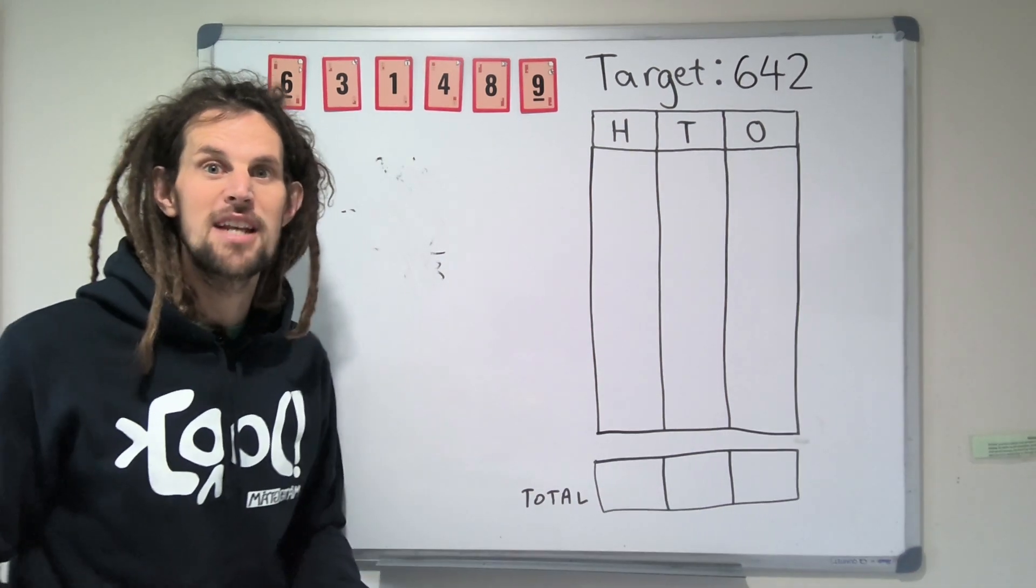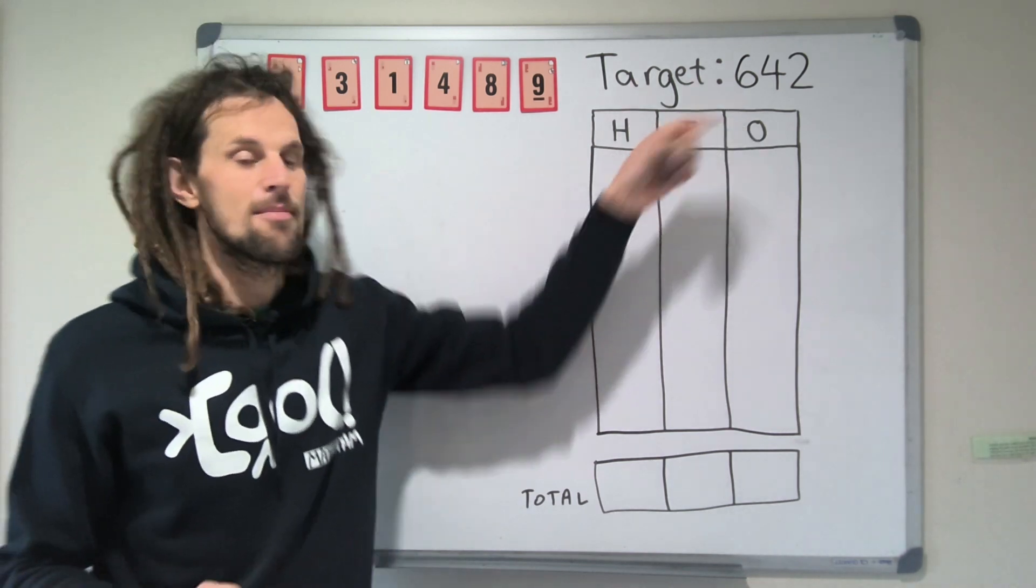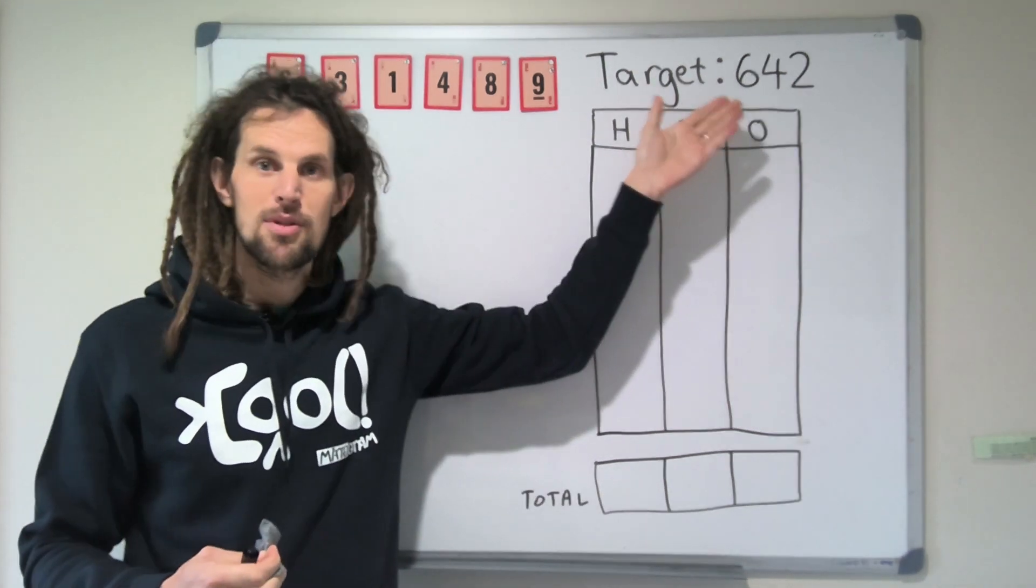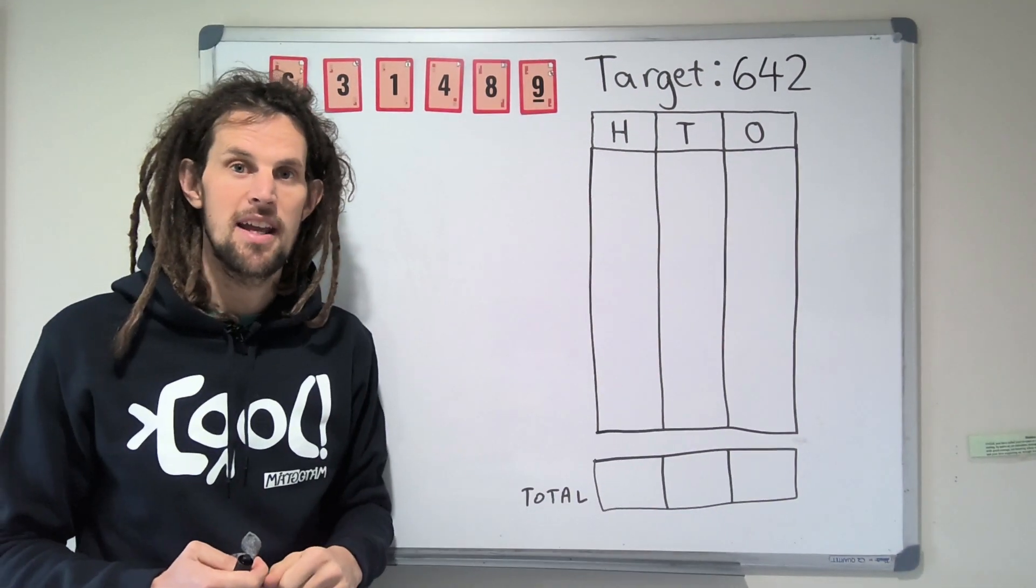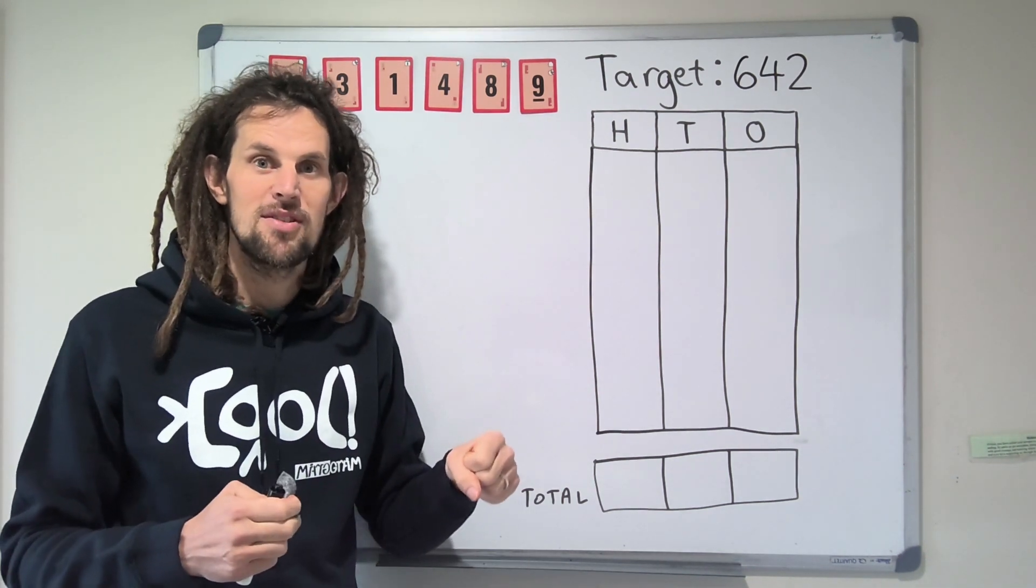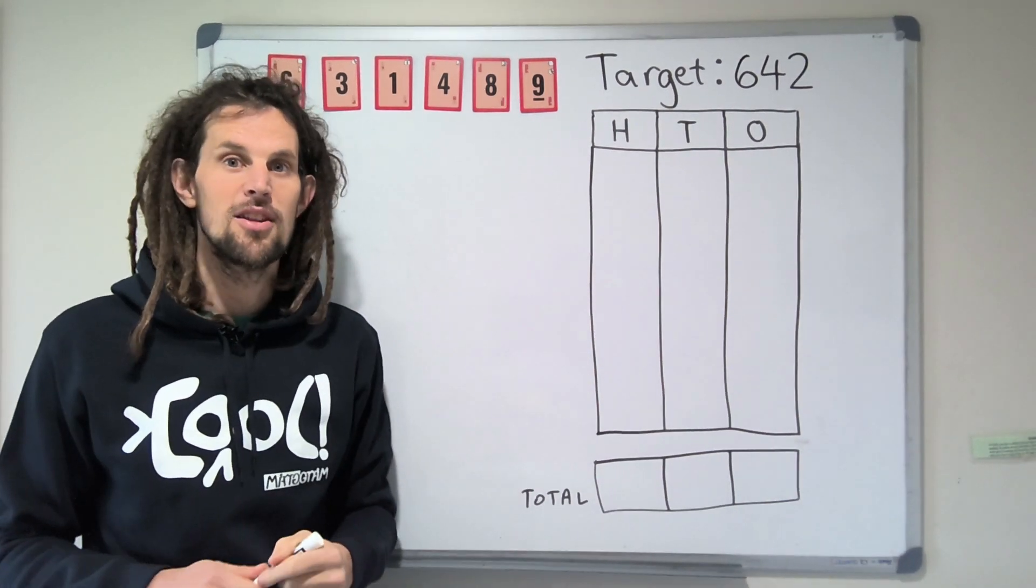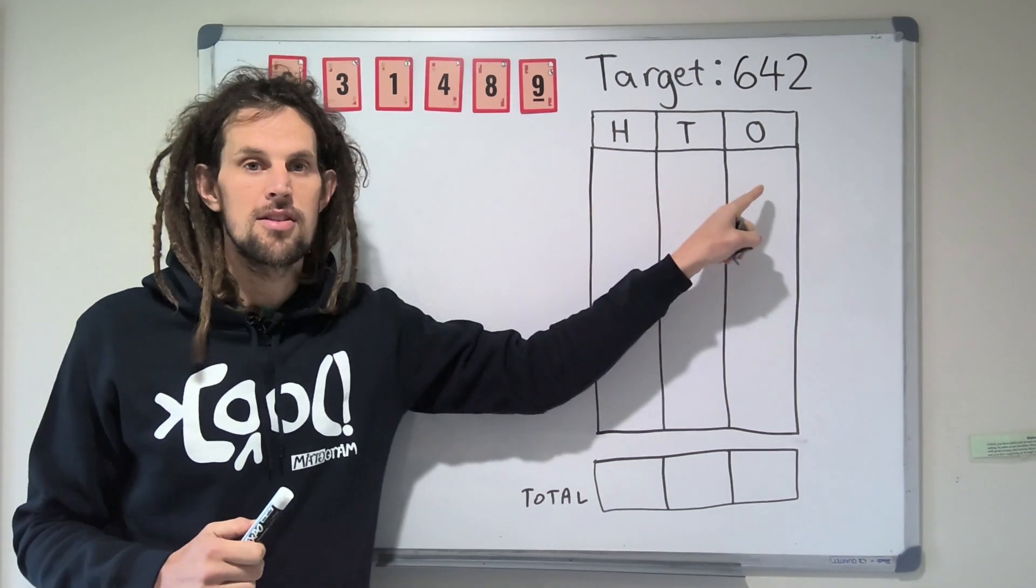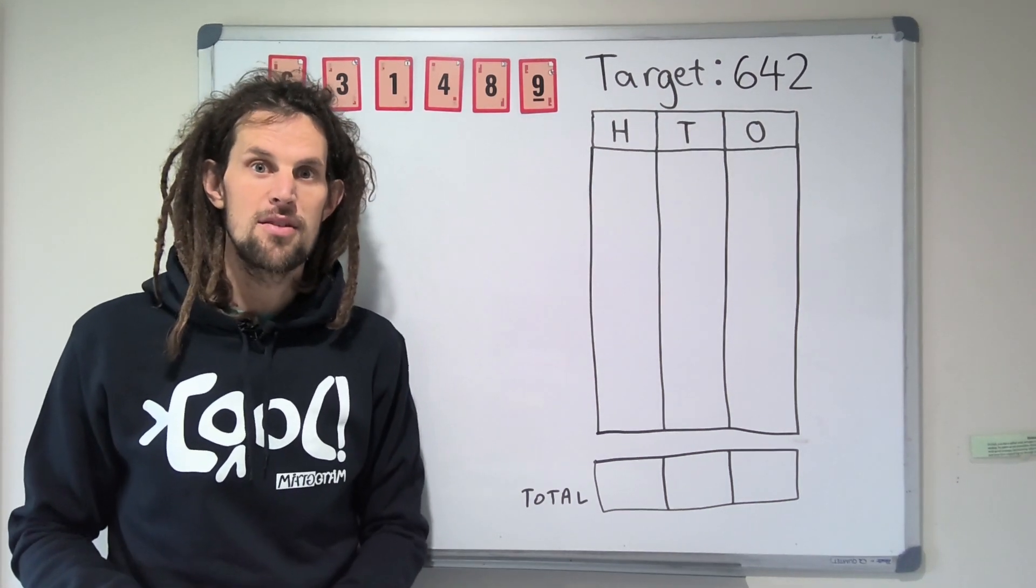So onto the game, this game is called Place Value Archery. What you've got to do is there's a target number. So to play this game it's zero prep. All you need to do is pick a target number between 300 and 1000, and then pick 6 random numbers between 1 and 10. I prefer to use cards because it adds the randomness in there. Sometimes if you're picking them yourself it doesn't, but you can easily write them down on the board. So what we have to do with these 6 numbers is we have to put them in the slots here to make a number as close to 642 as we can.